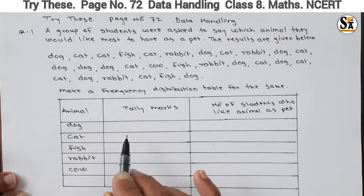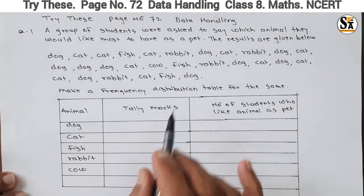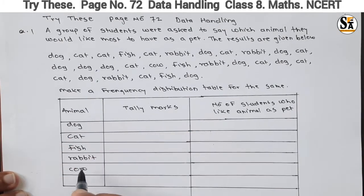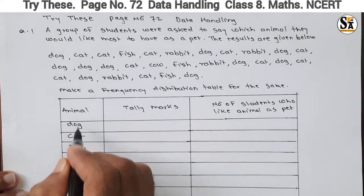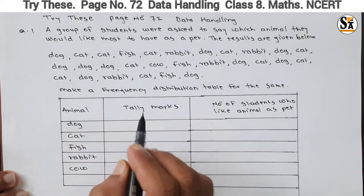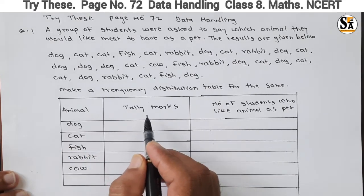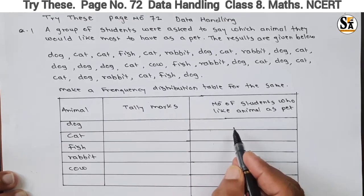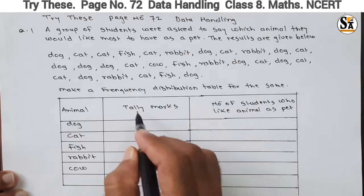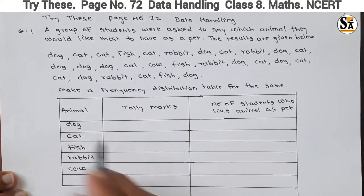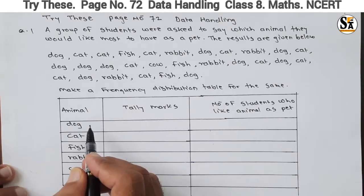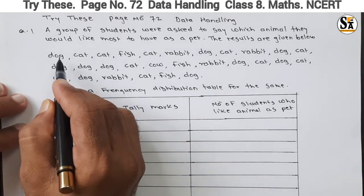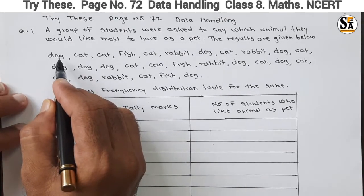This is a frequency distribution table. In the first column we have written the animal's name, in the second column we are going to make tally marks, and in the last column we will write the total of these tally marks. So let's start making the tally marks.